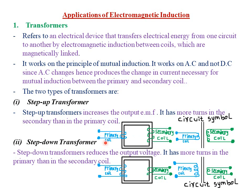Remember, the primary coil usually has the source of power. But for the step-up transformer, the EMF induced in the secondary coil — because it has more turns — will always be more than the EMF in the primary coil. In an electrical circuit, this is how we represent a step-up transformer: it has fewer turns, only one turn in the primary coil, and more turns in the secondary coil — about three turns.